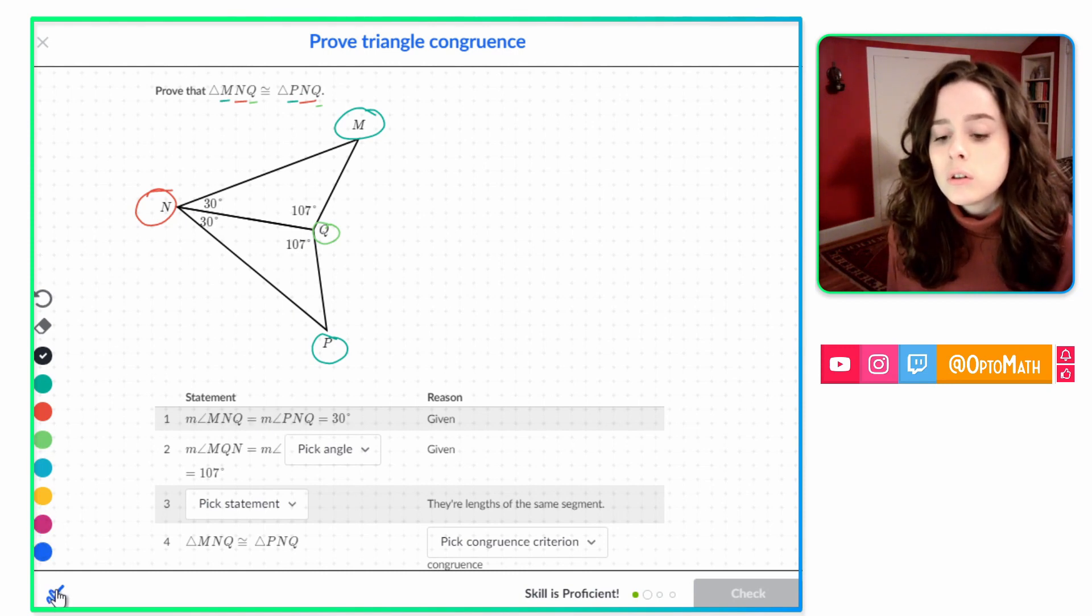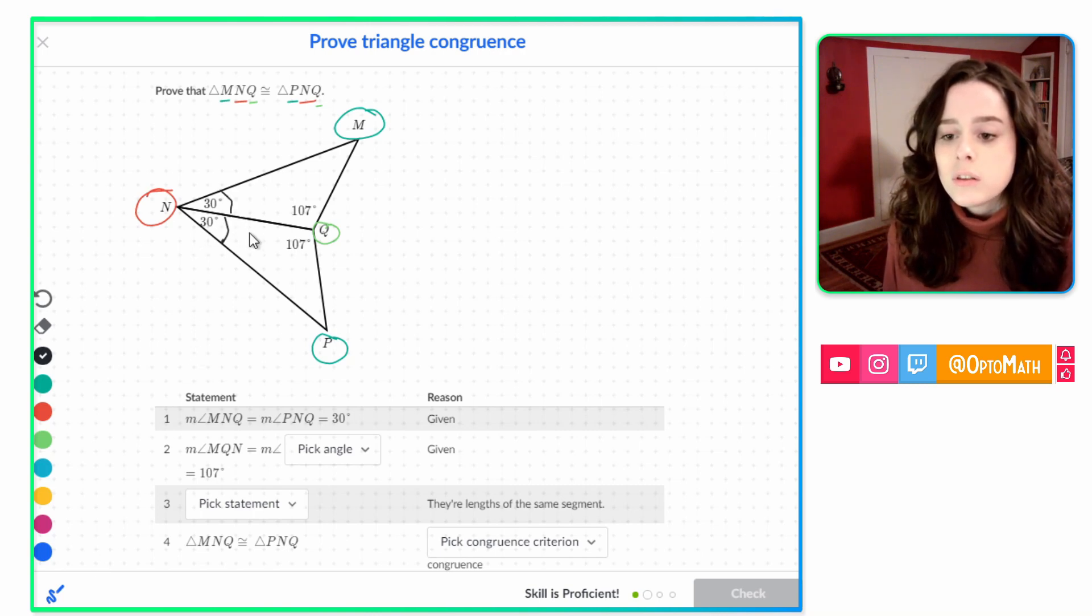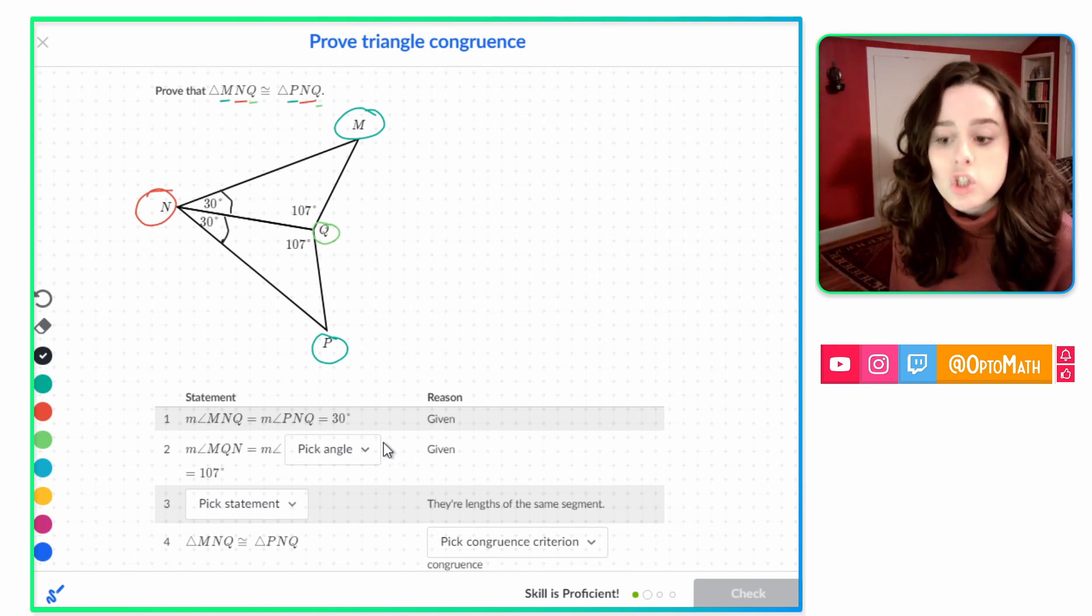So on this one, we're actually going to use these drop-down menus to actually choose the fill-in proof. So the first statement we have in our proof is the measure of angle MNQ is congruent to angle PNQ. So we see that that's true. That's those two angles. And they're both 30, and it is given. So we're good to check that that's true. And obviously, they're 30 also because it says it in the statement.